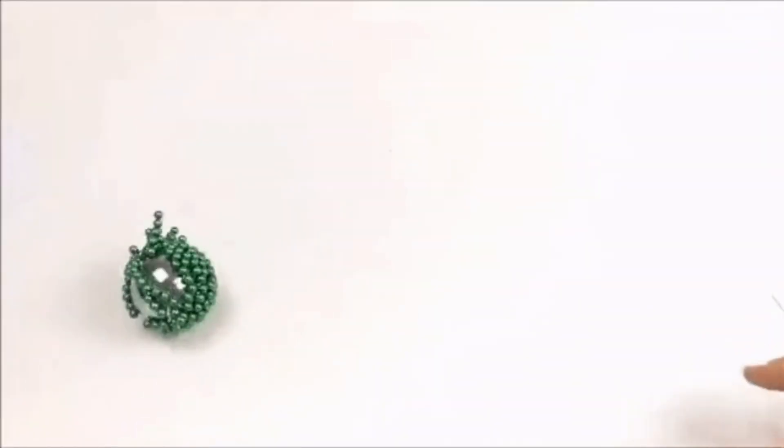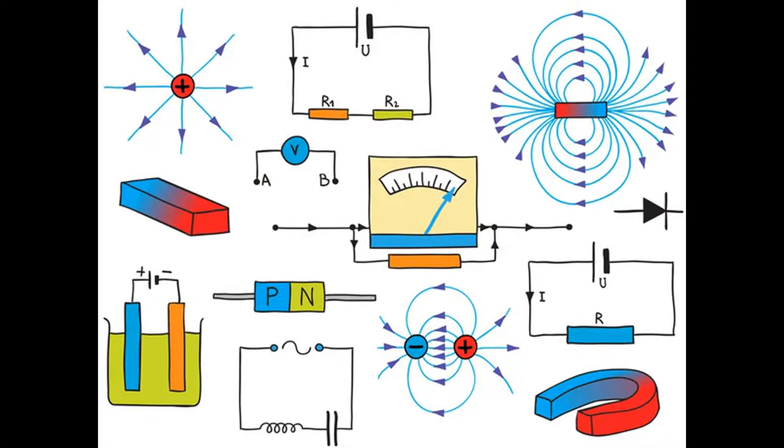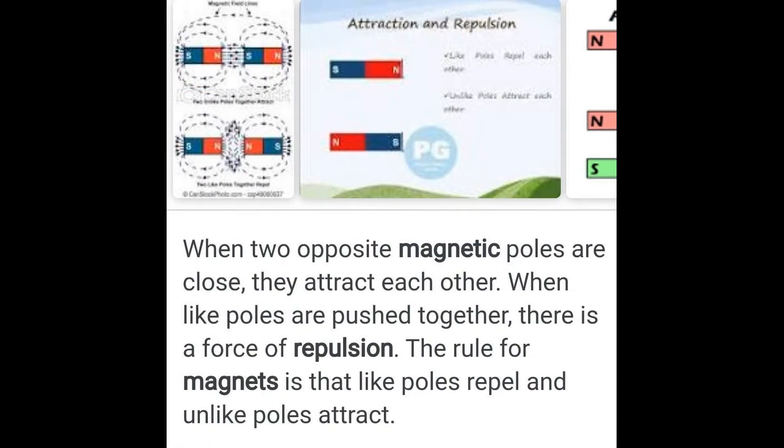However, if the object is repelled by a magnet, then it must be a magnet since only like poles of the two magnets repel. Thus, repulsion and not attraction is the sure test for polarity of a magnet.